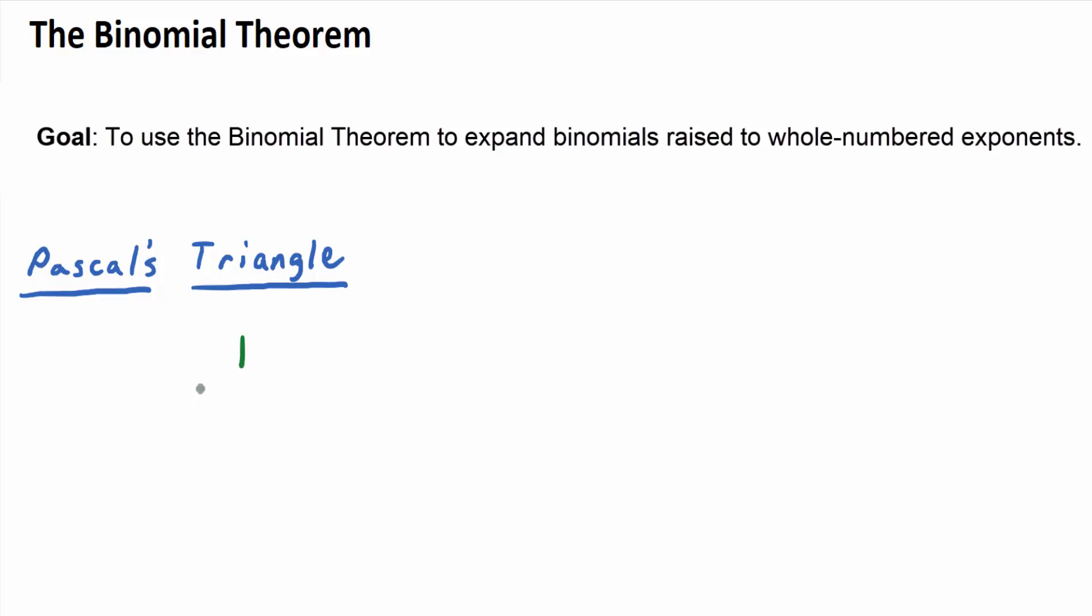We start on the outside of the triangle with some ones, like on the outside, in that sort of shape. And then to get the numbers on the inside, remember what you do? You add the numbers diagonally above to get the number down here. So one plus one is two, so that should be a two right there. And that is really a recursive sequence line of thought right there, isn't it? So Pascal's triangle is generated recursively.